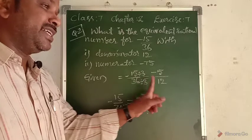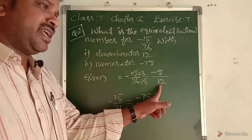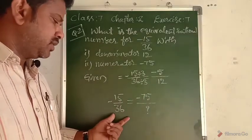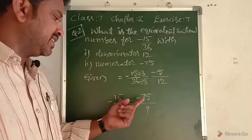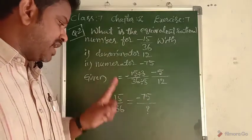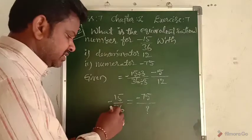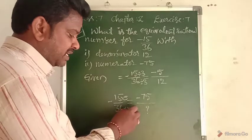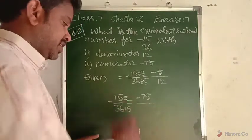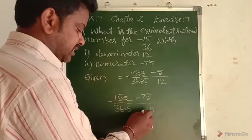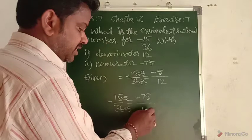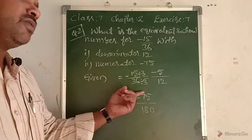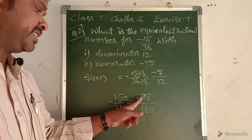Here the desired denominator is greater than the given fraction's denominator, so we multiply instead of divide. When 15 is multiplied by 5 we get 75, so the numerator is multiplied by 5 giving minus 75. Similarly, we multiply 36 by 5: 5 times 36 gives 180. So the denominator is 180.